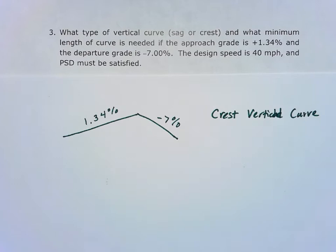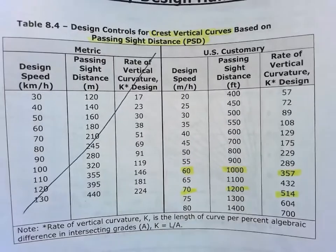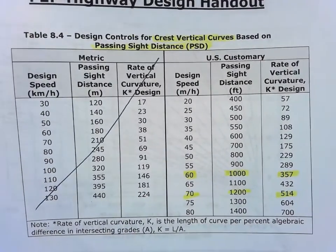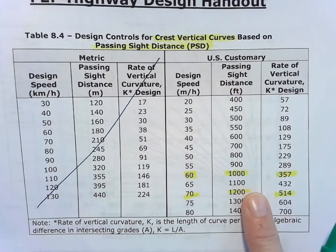And then the question is, what's the passing sight distance? What kind of length of curve can we have to satisfy that passing sight distance? So we'll go ahead to our FE handout here, table 8.4, which has our passing sight distance.